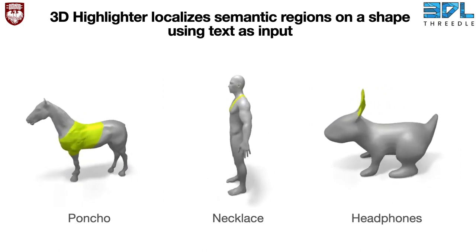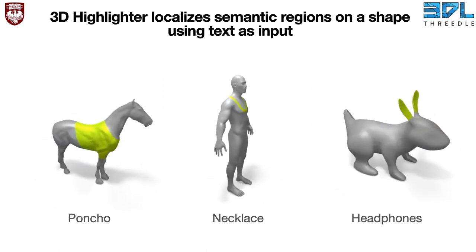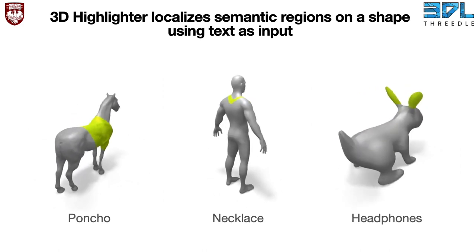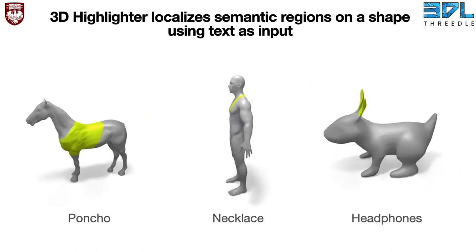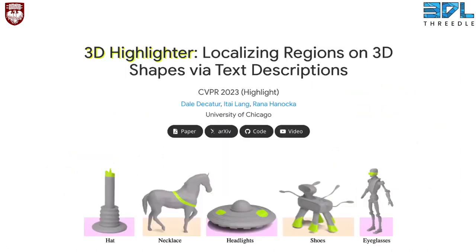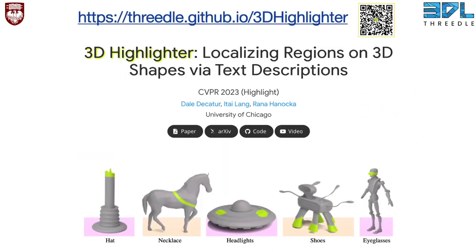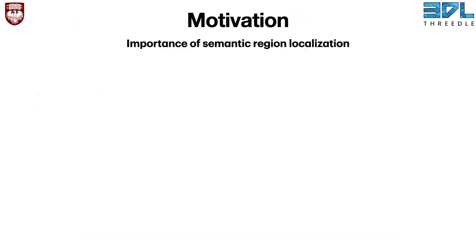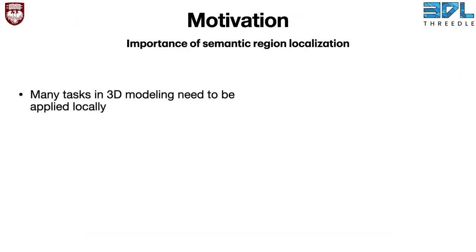Our technique reasons about where to place seemingly unrelated concepts in semantically meaningful locations on the 3D shape. For example, our method can hallucinate how to place a poncho on a horse or headphones on a bunny. Our work is motivated by the importance of semantic region localization for 3D modeling and editing, as many of these tasks need to be applied locally.